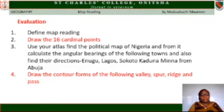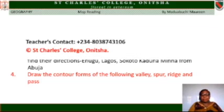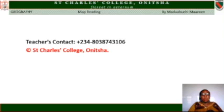We have come to the end of this lesson, and I hope my students enjoyed the lesson. Let me evaluate you with these questions: 1. Define map reading. 2. Draw the 16 cardinal points. 3. Use your atlas, find the political map of Nigeria, and from it calculate the angular bearings and directions of Enugu, Lagos, Sokoto, Kaduna, and Minna from Abuja — Abuja is the observer's position. 4. Draw the contour forms of valley, spur, ridge, and a pass. Do the assignment and submit to my WhatsApp number 080-387-43106. Thanks and God bless you.